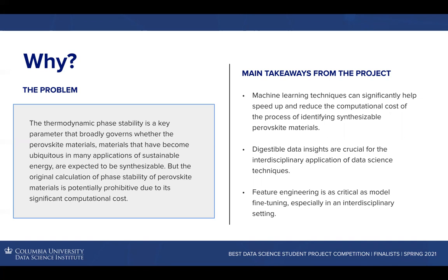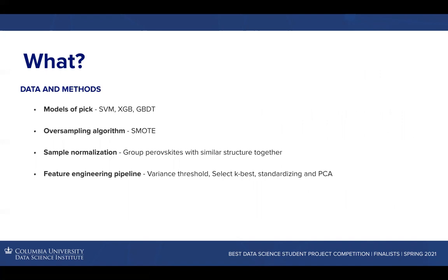Our approach could be divided into four parts. First, we use SVM, XGB, and GBDT, hopefully achieving a good balance between prediction explainability and accuracy. Second, we use the borderline SMOTE algorithm to make synthetic data along the decision boundary, which maximizes the expressiveness of the minority class during training. Third, we split perovskite materials with similar chemical compounds into different subgroups because we wanted to test our intuition that similar perovskite materials behave similarly in terms of stability. Fourth, we assemble a series of feature selection and model fine-tuning processes into a machine learning pipeline to make better feature selection and to further boost the performance of the models.